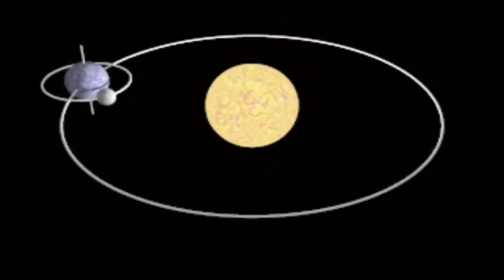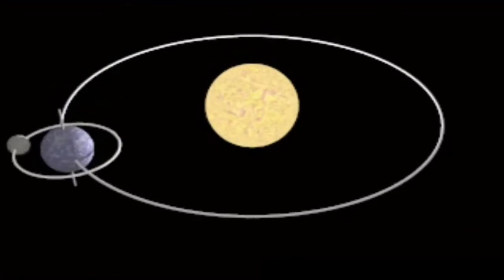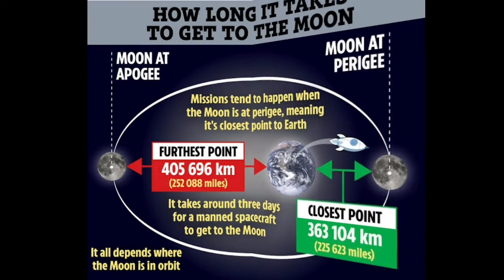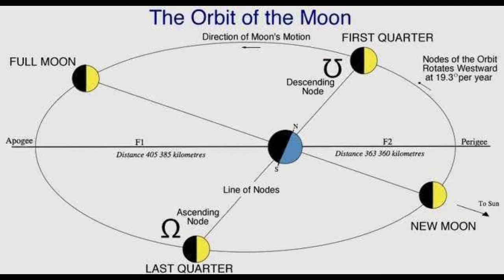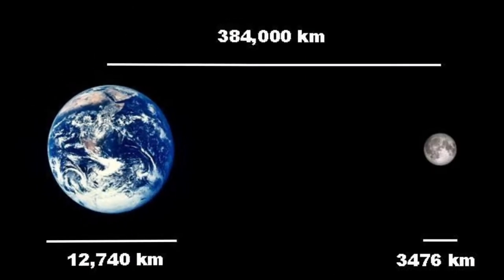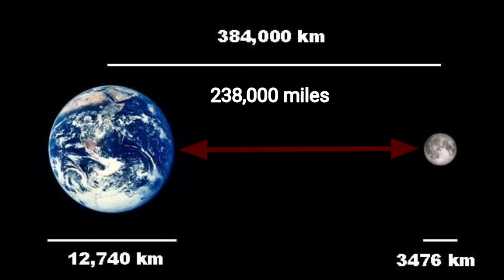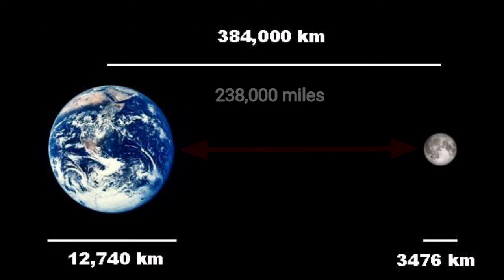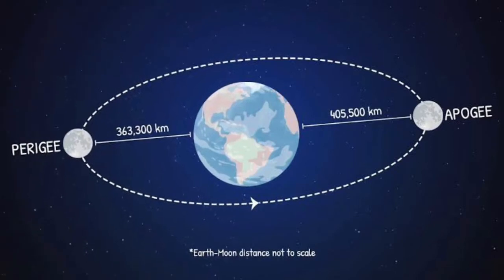The moon's orbit around Earth is elliptical, with one side closer to the Earth than the other, as you can see in the image. As a result, the distance between the moon and the Earth varies throughout the month and the year. On average, the distance is about 382,900 km or 238,000 miles from the moon's center to the center of the Earth.